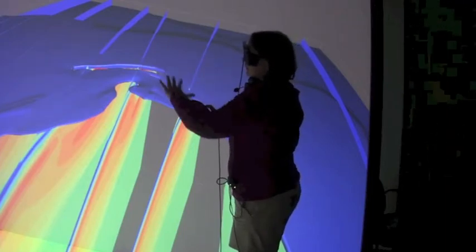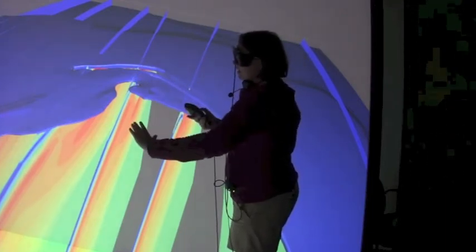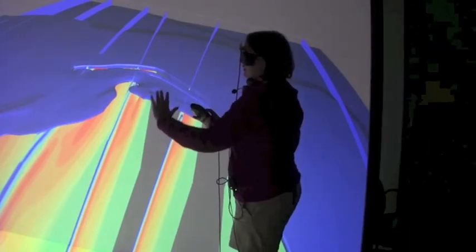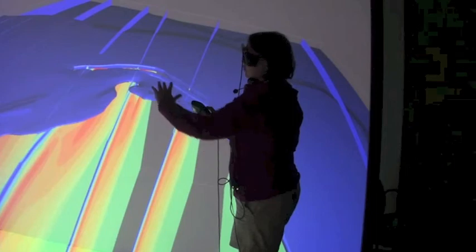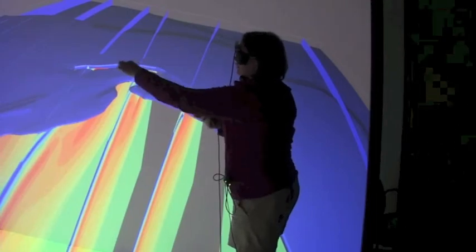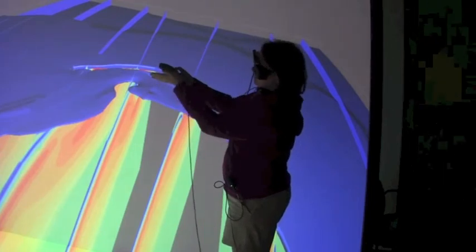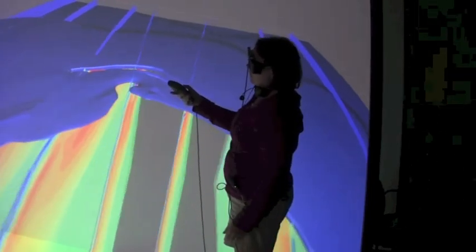What these models show is that the motion of this Wrangell block is being driven by the flat slab subduction. It's this flat slab subduction essentially driving the Wrangell block into this bend of the Denali fault where the central Alaska Range is located, causing mountain building including the tallest mountain in North America.